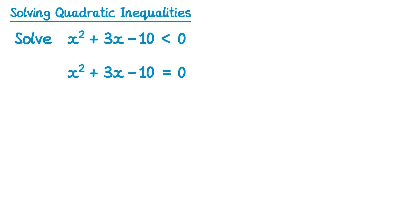Now we already know how to solve a quadratic equation like this. We would factorise it into two brackets. This one would be x plus 5 and x minus 2, and that would give solutions x equals negative 5 and x equals positive 2. These numbers here, negative 5 and positive 2, are known as critical values.